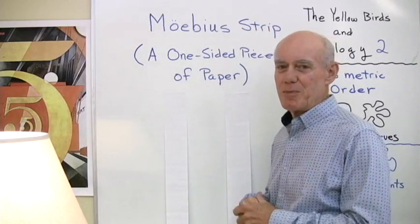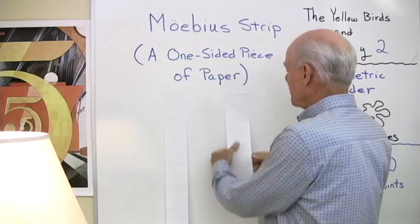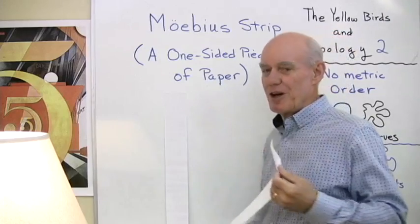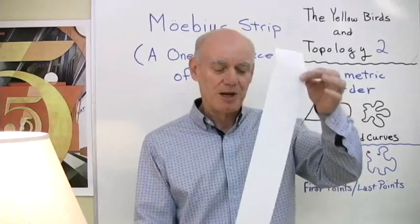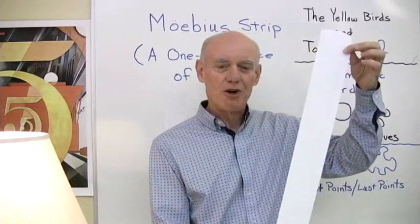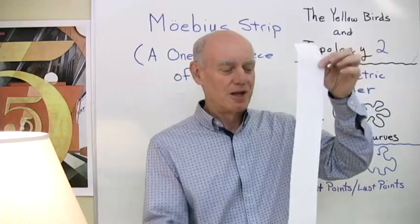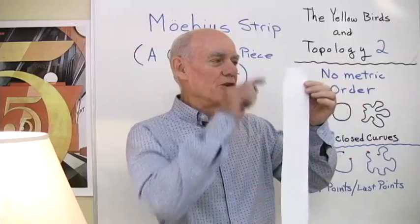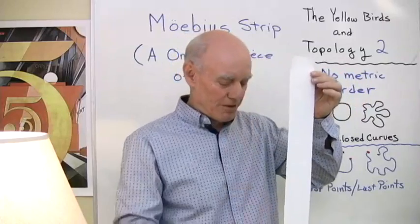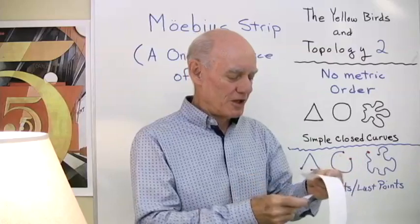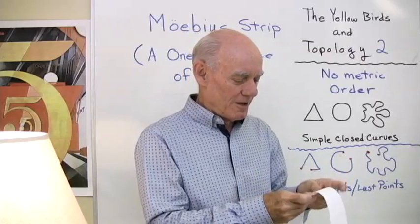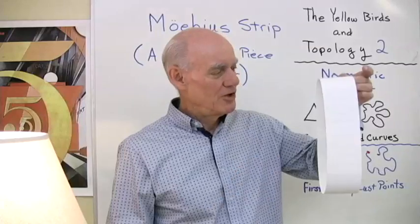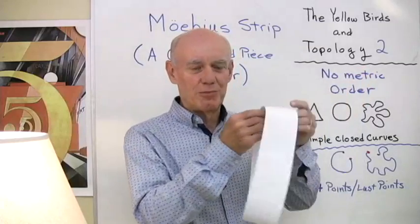The Mobius Strip is a one-sided piece of paper. So I've got two strips right here. And so first of all, I'm going to show you a two-sided piece of paper. And we intuitively know what a side of a piece of paper is and what an edge is. So I'm going to make a loop out of this so we don't have to worry about this part right here or the bottom part. So I'm just going to take and put these two edges together to form this loop right here.